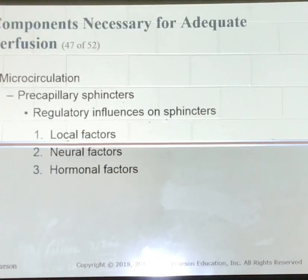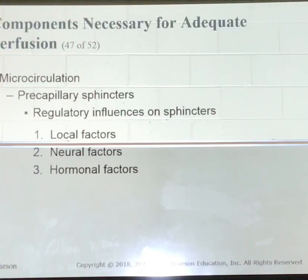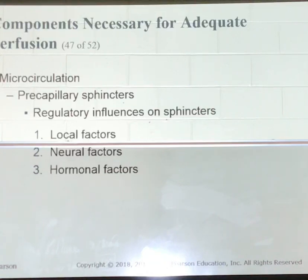Some of the factors that can influence your microcirculation: temperature — if you get cold, your blood goes to your core. Hypoxia means not enough oxygen. If you don't have enough oxygen, your blood is going to oxygenate your liver, your lungs, and your heart — your main organs — rather than your fingers and toes.